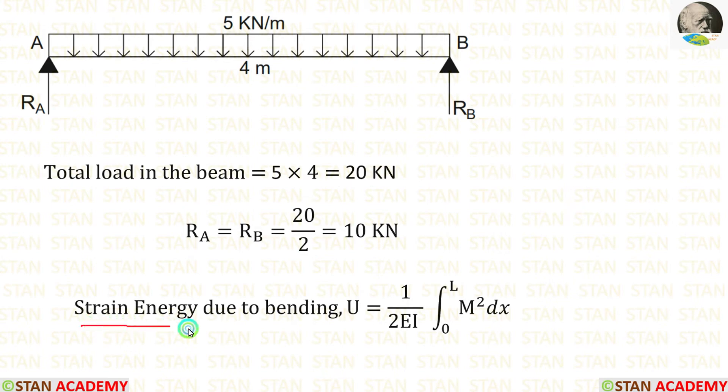We know the formula for strain energy due to bending. U is equal to 1 by 2 EI integration of m square dx. For calculating this, we have to make section in the beam. In this beam, UDL is acting constantly for the whole length. So only one section is enough. We can make the section anywhere in the beam.